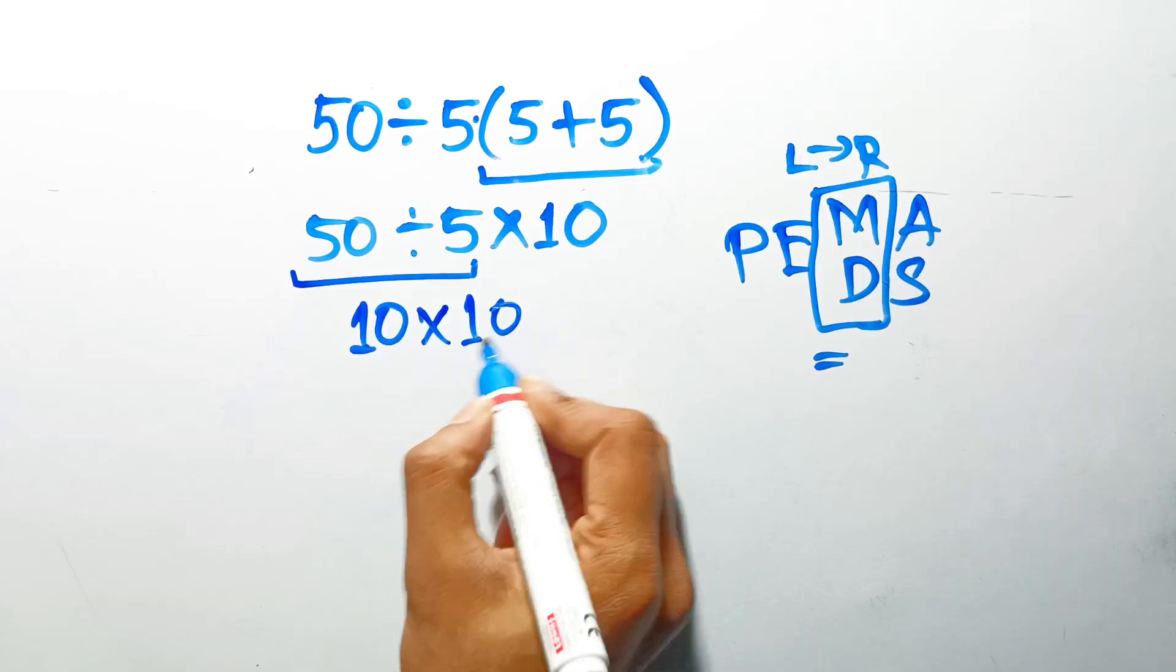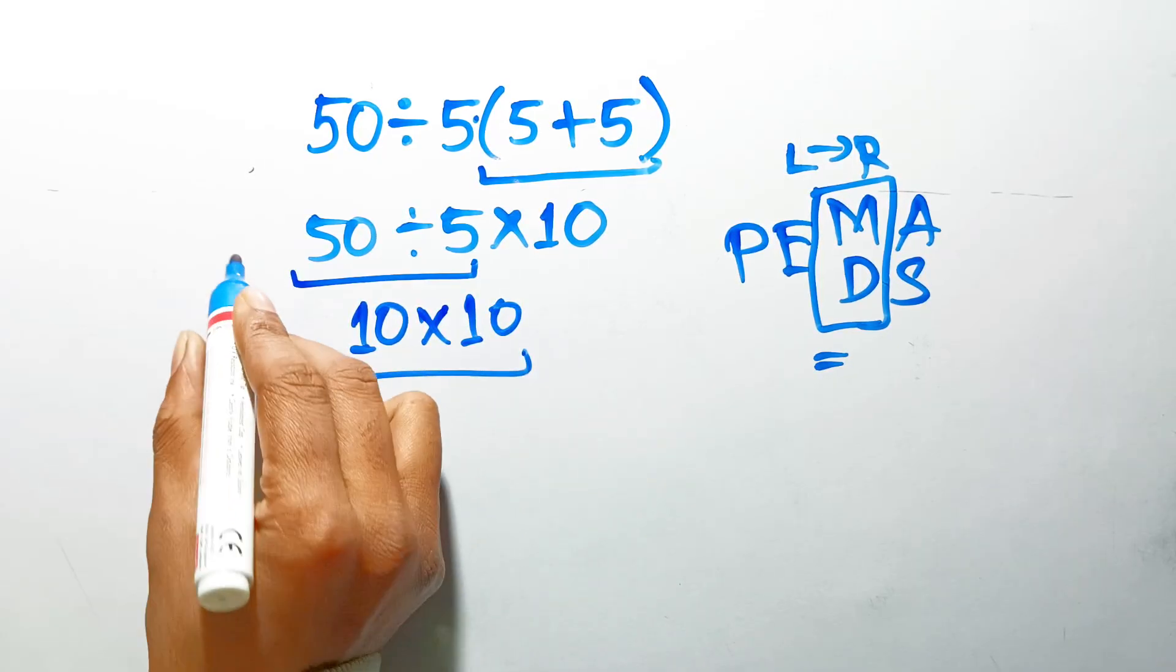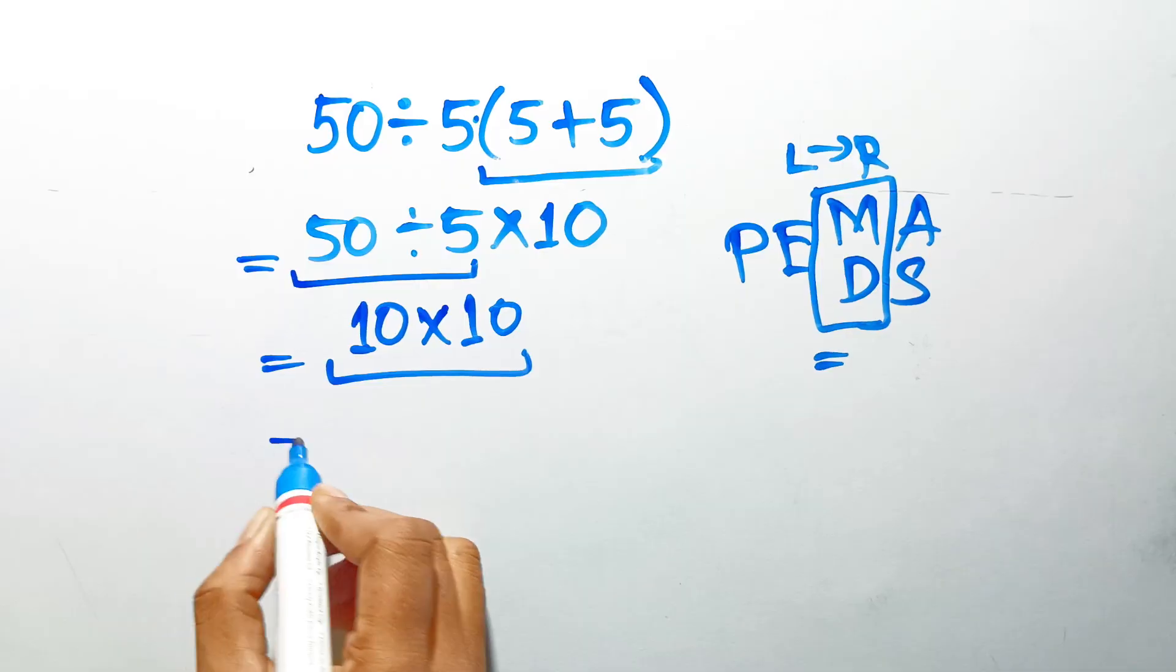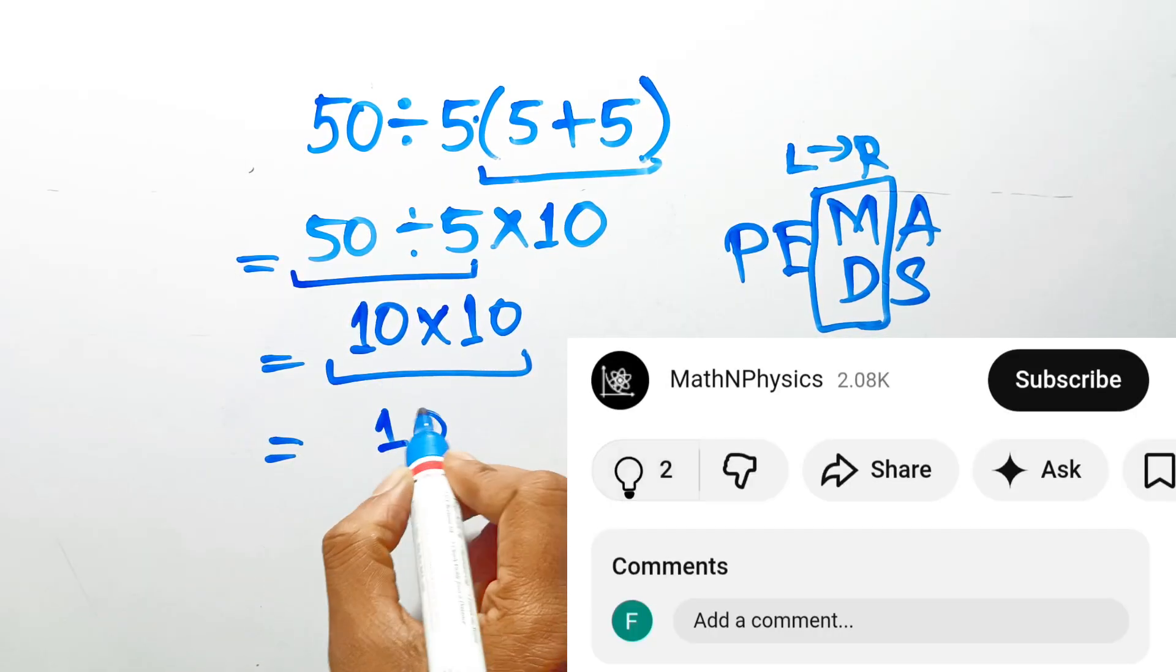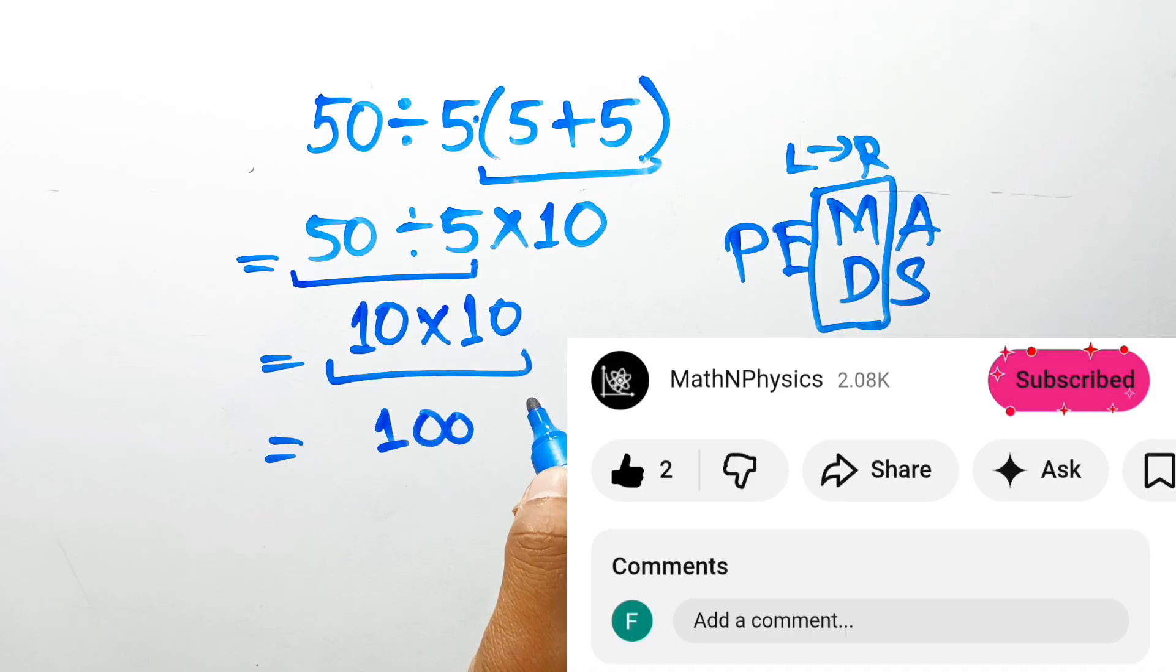So we have 10 times 10, and now we are just left with a simple multiplication problem to finish it off. So we have 10 times 10, and this is equal to 100.